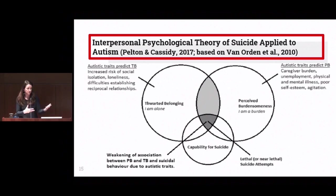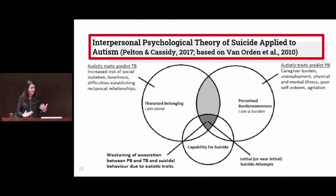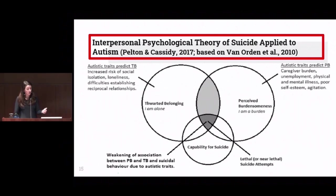Different mental health conditions contribute to these proximal variables. Depression contributes to thwarted belonging — you isolate yourself, people may not want to spend time with you — and to perceived burdensomeness, feeling you have nothing to contribute. Psychosis is also a condition with a high rate of suicide where these dynamics come into play. In autism, we can think about characteristics that contribute to perceived burdensomeness, including caregiver burden, unemployment, physical and mental illness, and poor self-esteem.